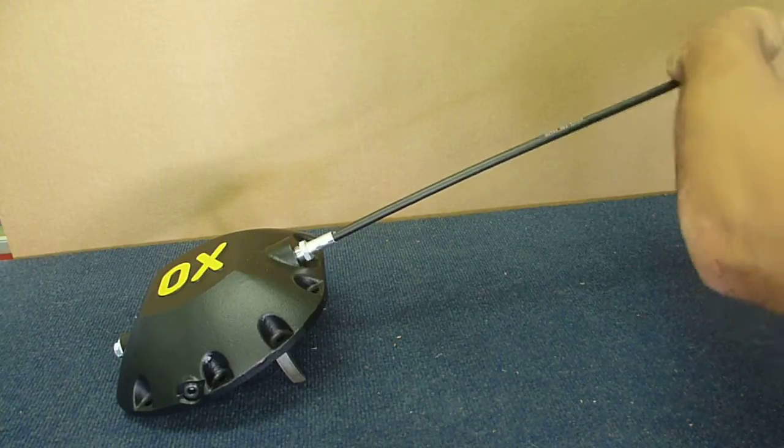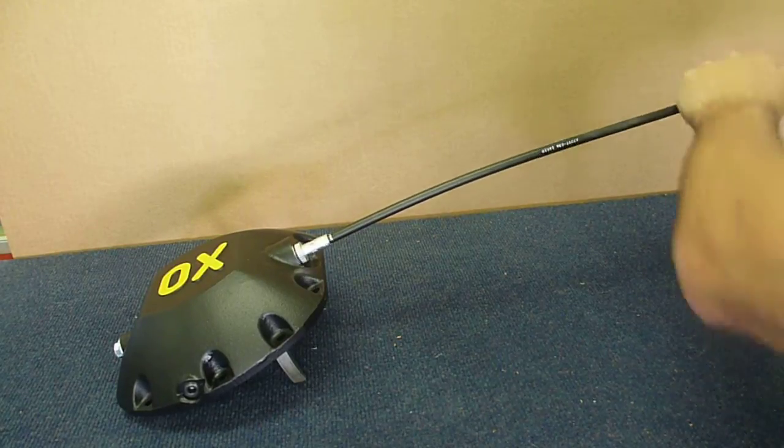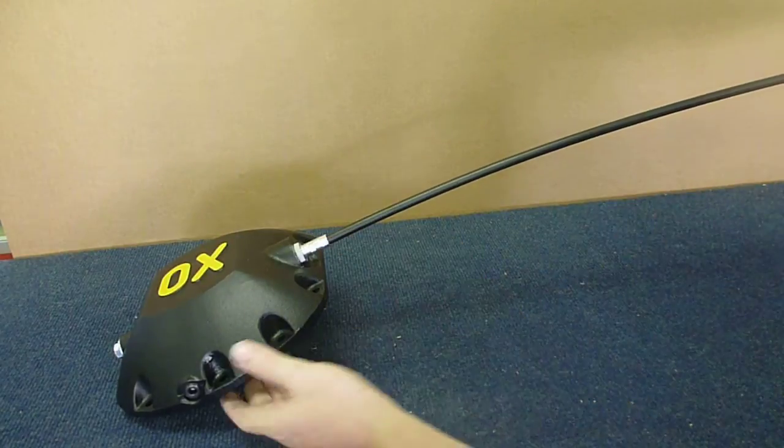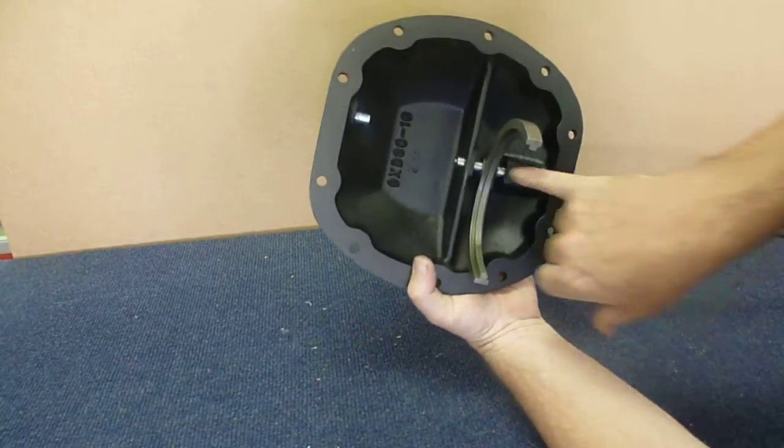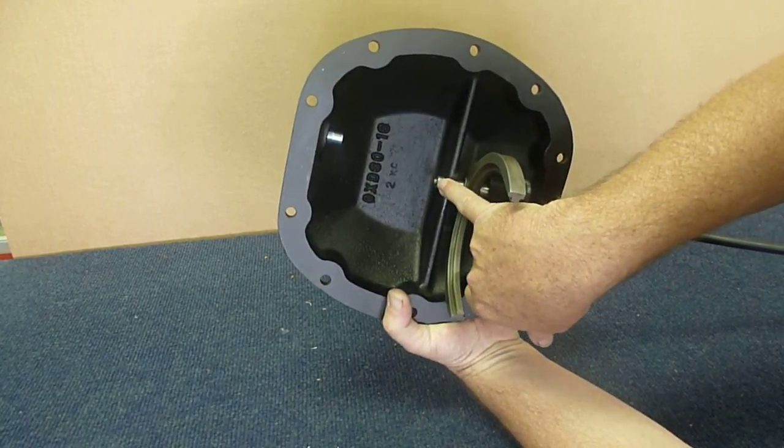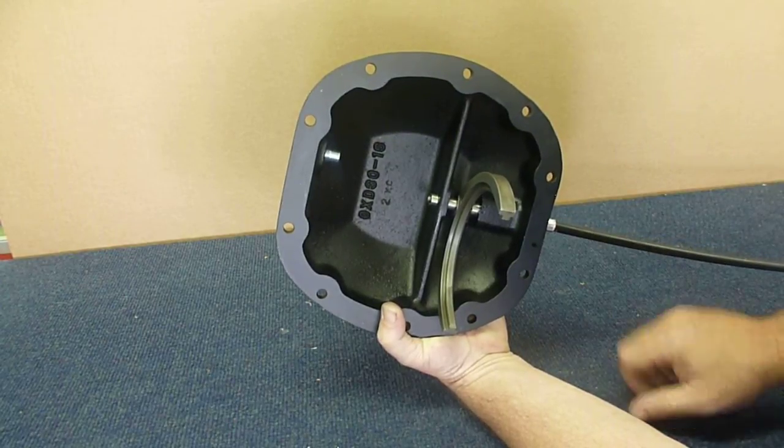Get that all the way screwed down inside there and then you'll want to snug that up with a wrench. And as you can see we have about one thread sticking out there. If it's give or take one thread that's not too big of a deal. It'll all adjust out at the other end but that's installed.